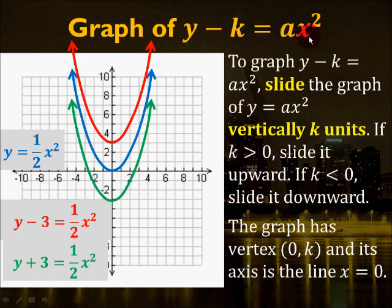So when you have a k value after the y, that tells you to shift up or down. When you have the h value after the x, that tells you to shift left or right. And the value of a tells you whether the parabola opens up or down, and how wide or narrow it is. Now we're going to put it all together.